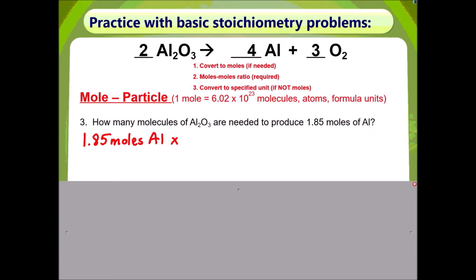Now we're going to move on to a mole-to-particle problem. The question asks: how many molecules of aluminum oxide are needed to produce 1.85 moles of aluminum? Of course, we start by writing down the given, which is 1.85 moles of aluminum.